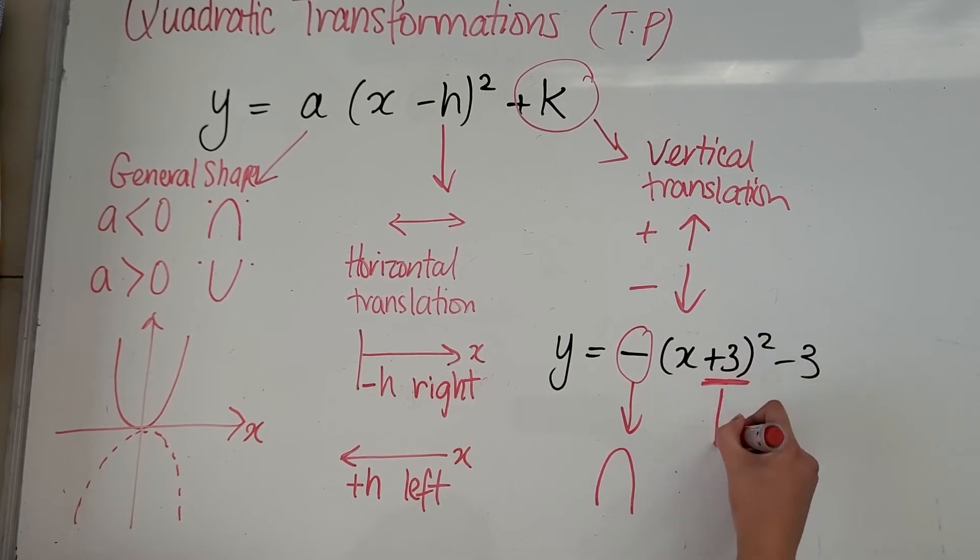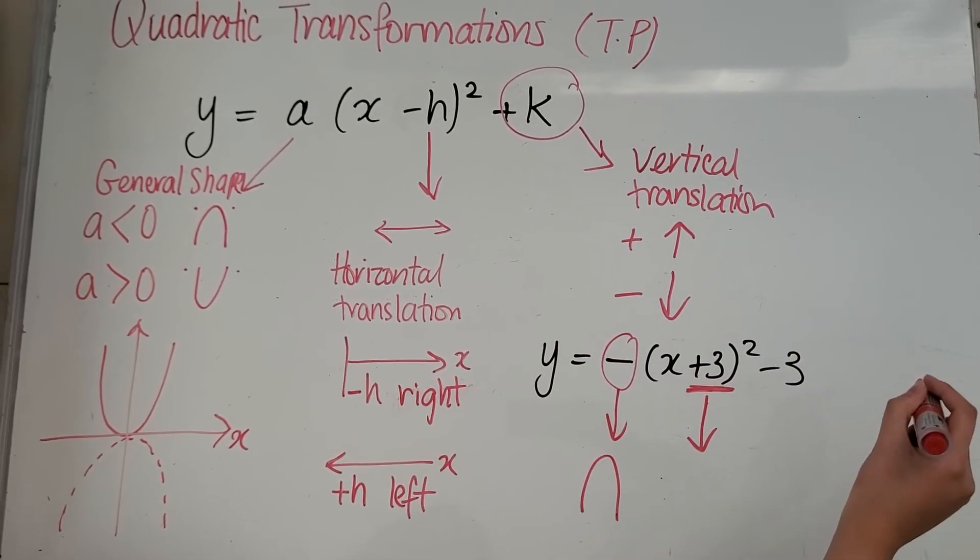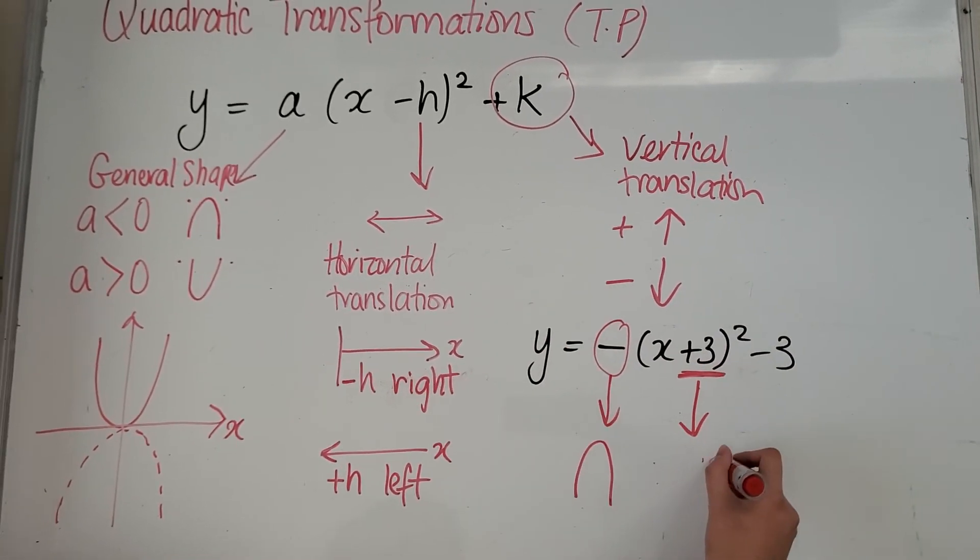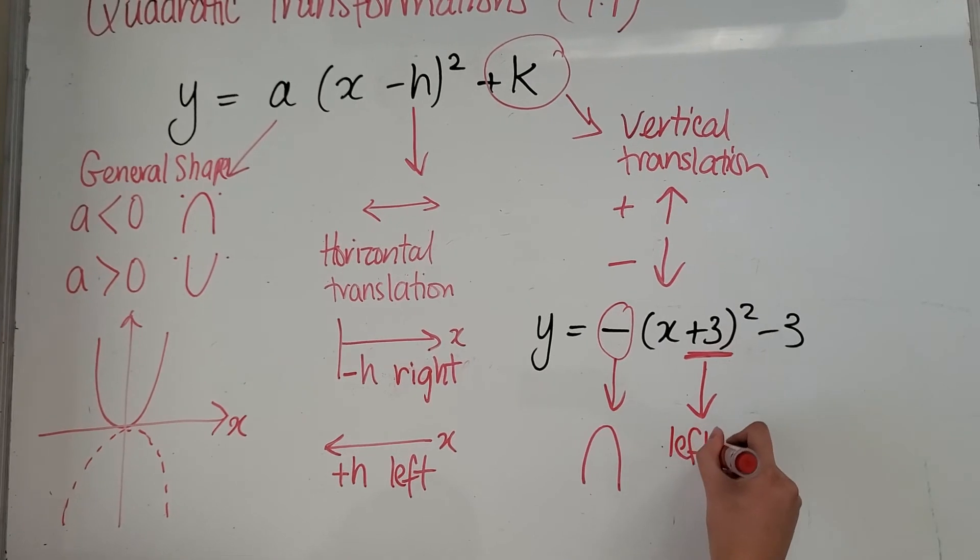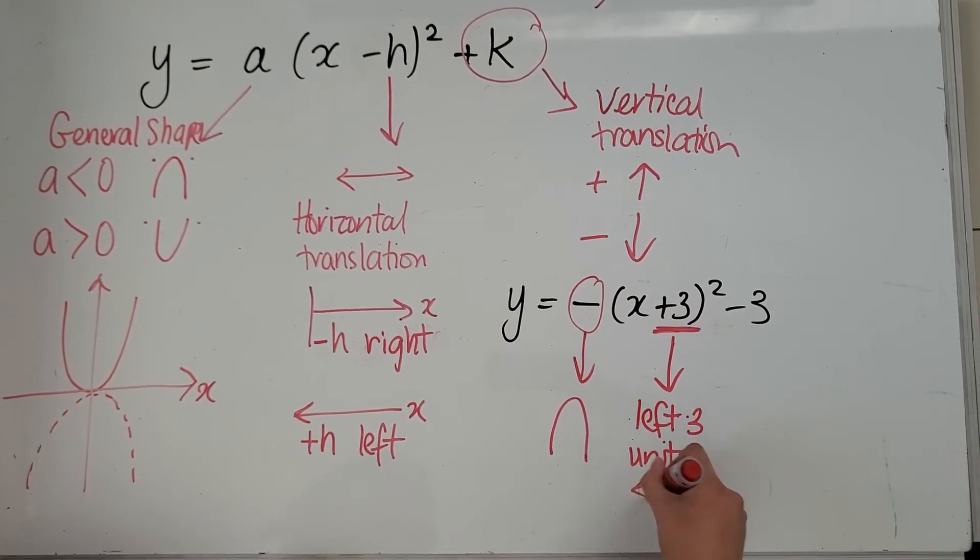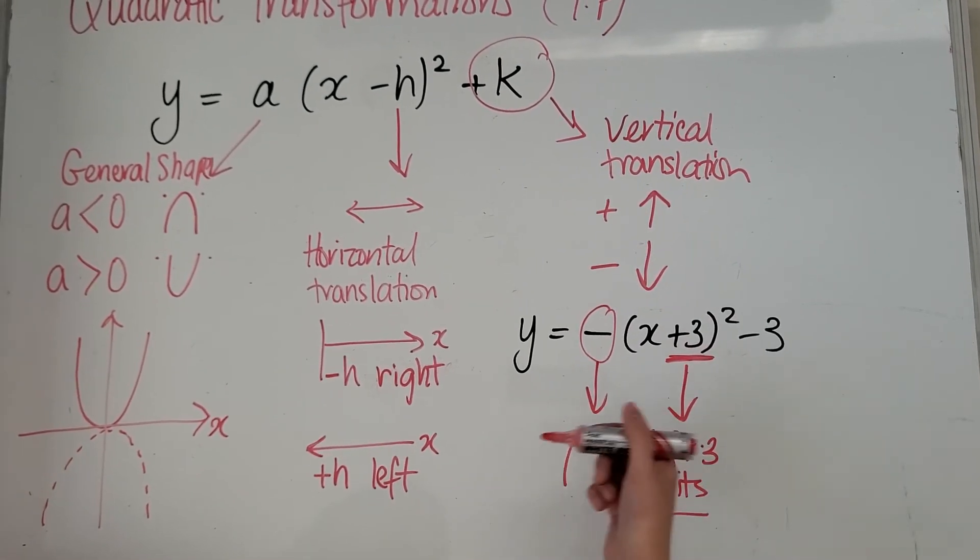Next, have a look at that plus 3. Remember, opposite. So plus 3 doesn't go towards the positive x, goes towards the negative. So it goes to the left, three units. That way. Remember it's part of your x, so it's going towards the horizontal X axis.